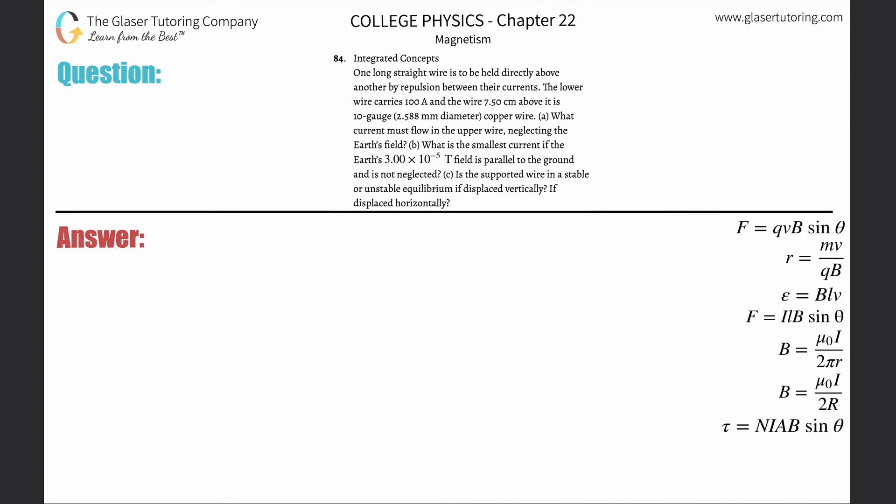Number 84, integrated concepts. One long straight wire is to be held directly above another by repulsion between the currents. The lower wire carries 100 amps and the wire 7.5 centimeters above it is 10 gauge diameter copper wire. Letter A: what current must flow in the upper wire, neglecting Earth's field?